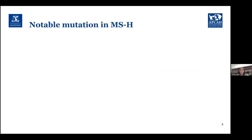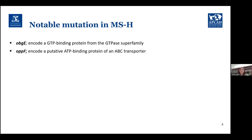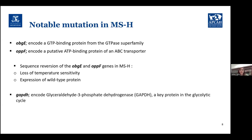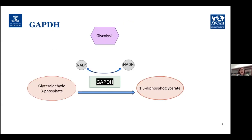There are some notable mutations in MSH. One of them is OBG, a gene encoding a GTP-binding protein from the GTPase superfamily. Another is OPF, which encodes a putative ATP-binding protein of an ABC transporter. Some MSH re-isolates that have reversions in the OBG and OPF sequences show two characteristics: loss of temperature sensitivity, and expression of wild-type protein of OBG and OPF. Another notable mutation in MSH is GAPDH, which encodes glyceraldehyde-3-phosphate dehydrogenase — a key protein in the glycolytic cycle.